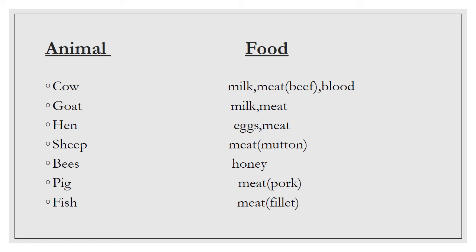Cow's meat is called beef. Some cook and eat it as food, used with ugali. A goat gives us milk and meat. We drink milk from a goat and we eat the meat.